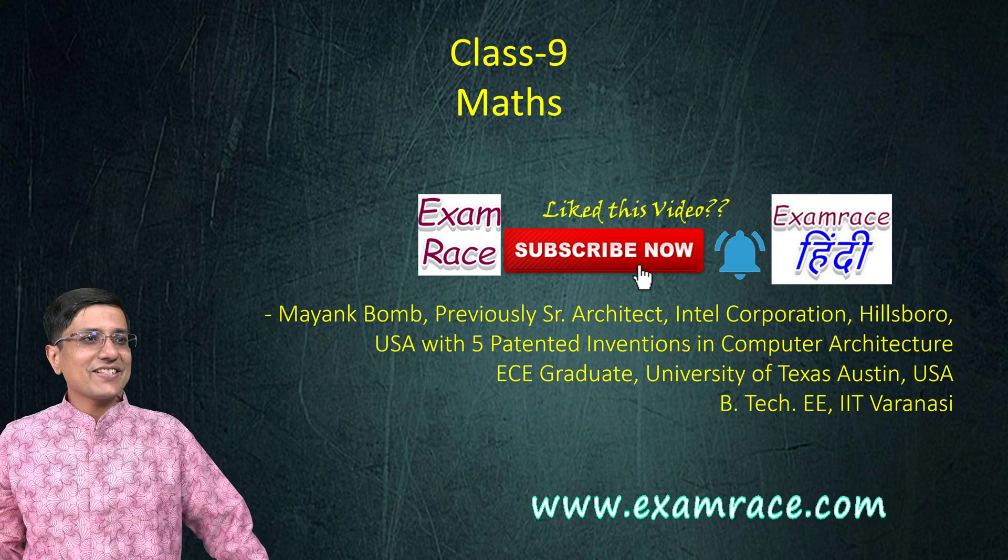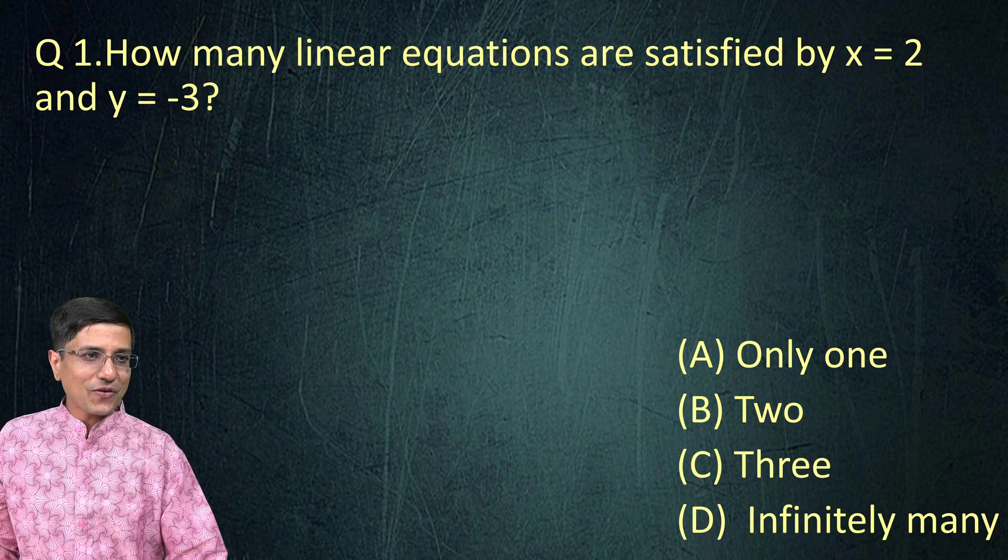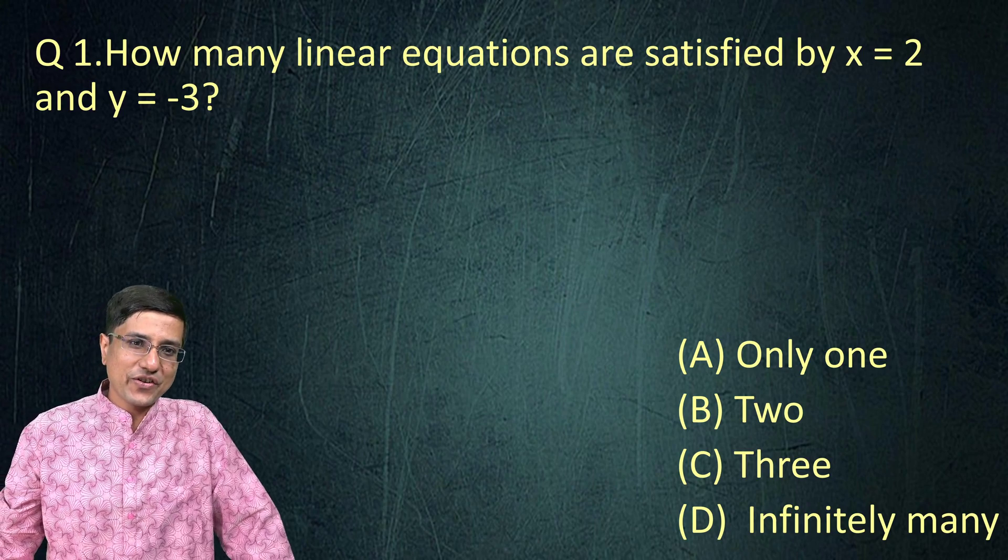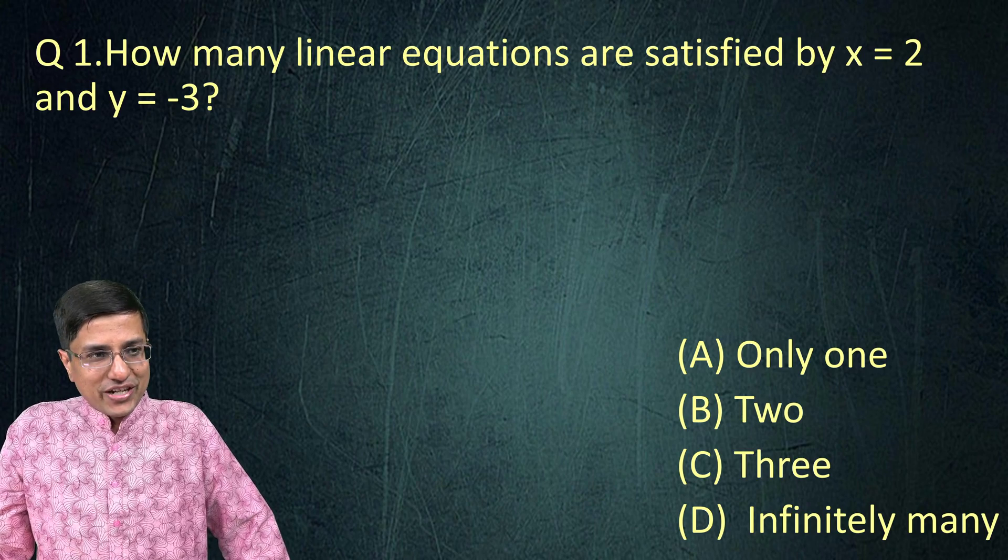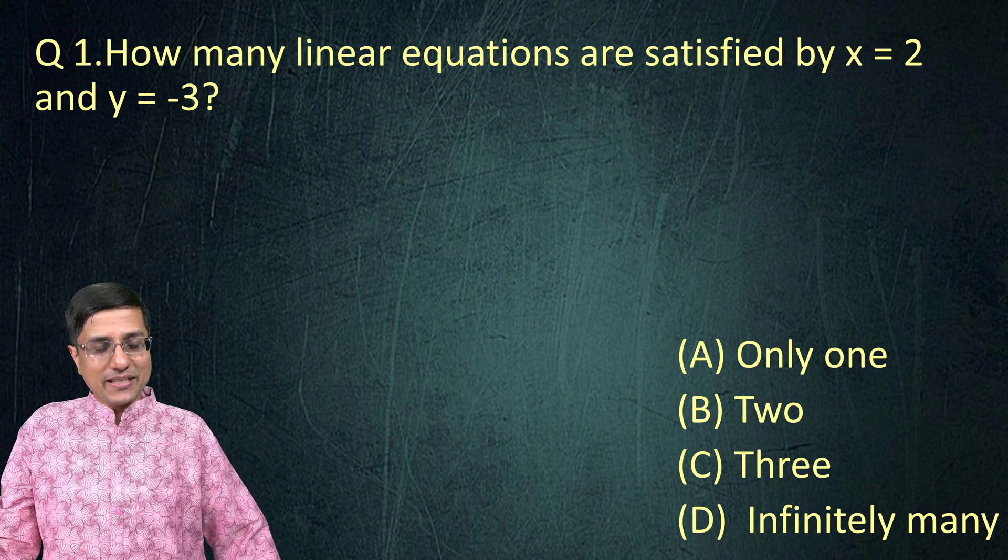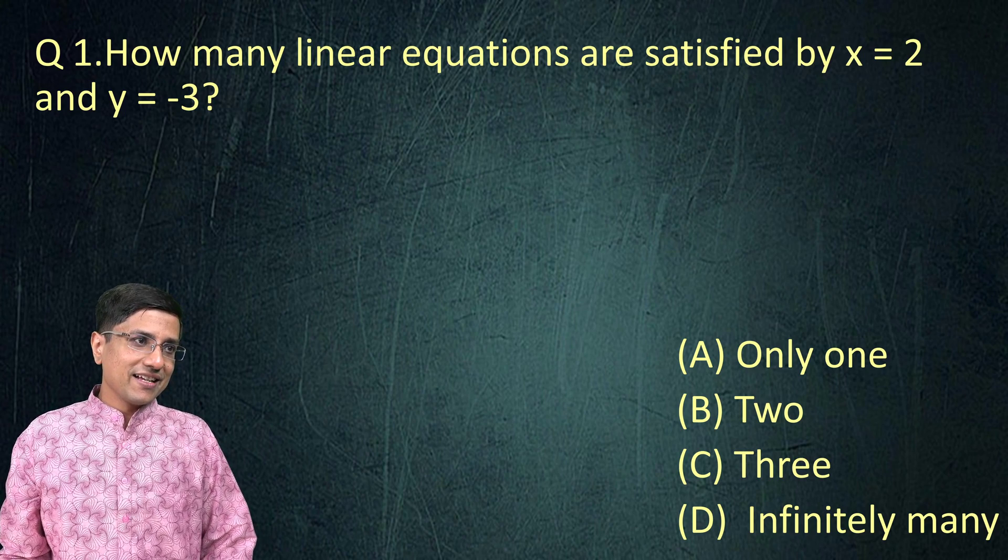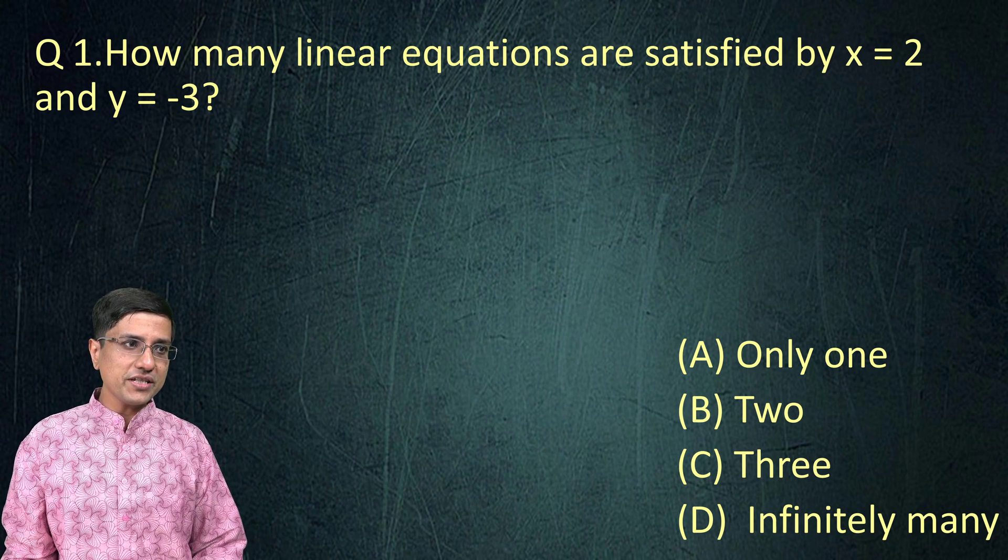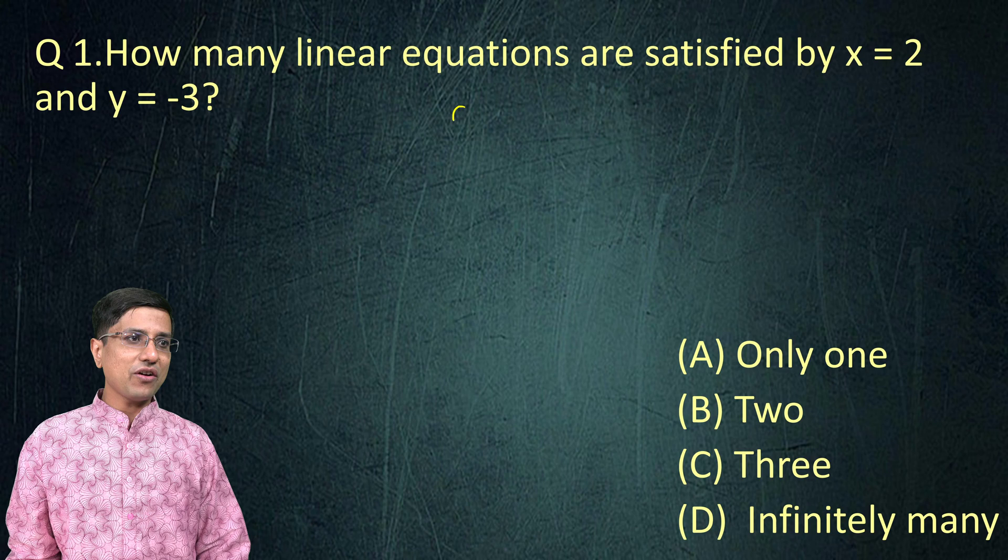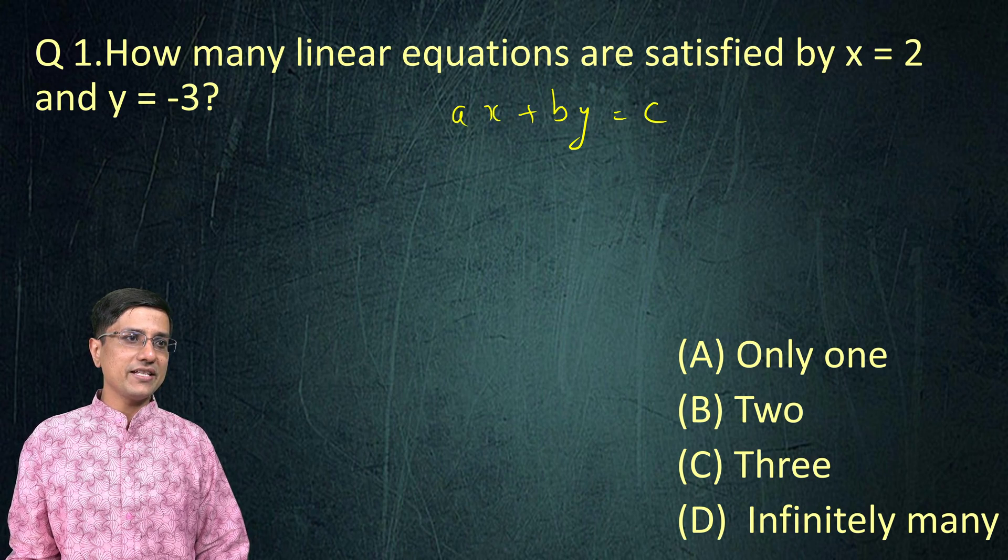Now let's look at some questions for Class 9 math. These are Olympiad problems, so obviously slightly more tricky than your usual problems. Here we start with our very first question. This question is pretty simple for those who have understood the basic concepts. We have to find out how many linear equations - so what is a linear equation? A linear equation is of the form ax + by = c.